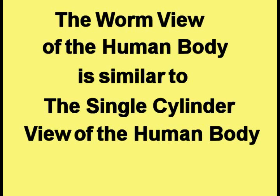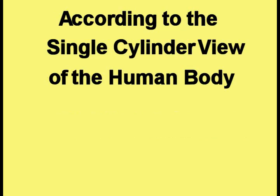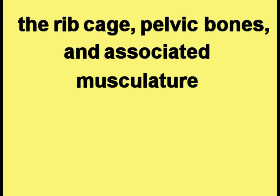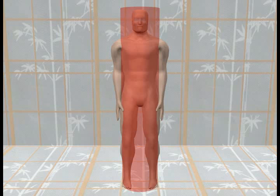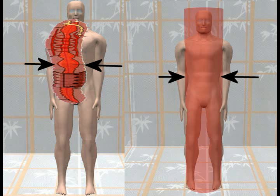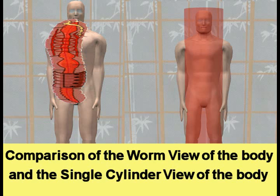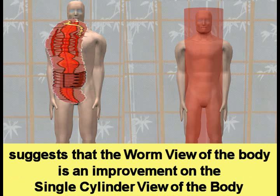The worm view of the human body is similar to the single cylinder view of the human body. According to the single cylinder view, the ribcage, pelvic bones, and associated musculature can behave like a cylinder located on the human body, as shown in this picture. This cylinder encloses the torso the same way the cylindrical body of the worm encloses the torso. Comparison of the two views suggests that the worm view is an improvement on the single cylinder view.